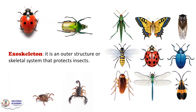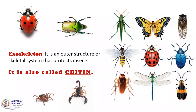One of the key features of insects is the exoskeleton. All insects have an exoskeleton. The exoskeleton is an outer structure or skeletal system that protects insects. It is the hard body cover we see in all insects. These hard body covers protect insects from harmful predators and from adverse outside conditions. This exoskeleton is also called chitin.